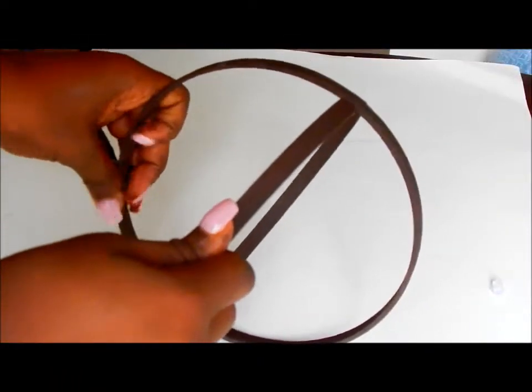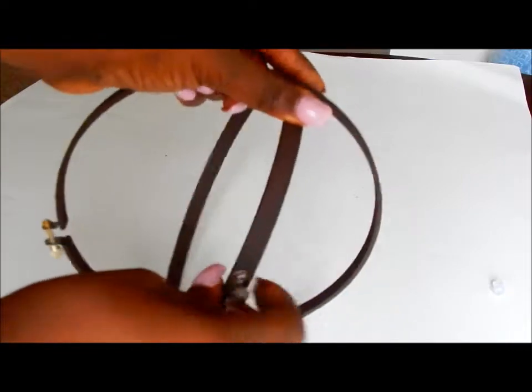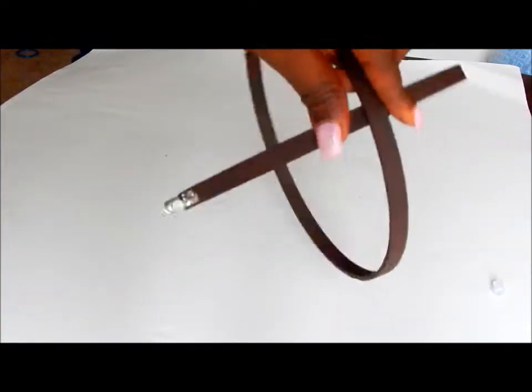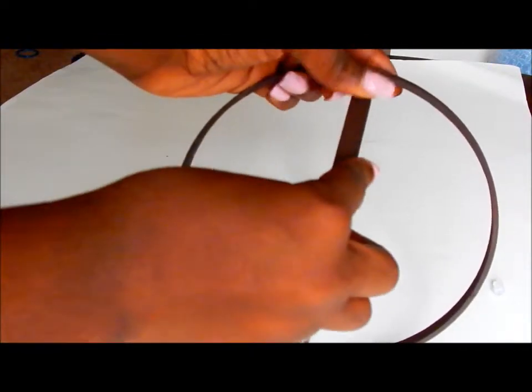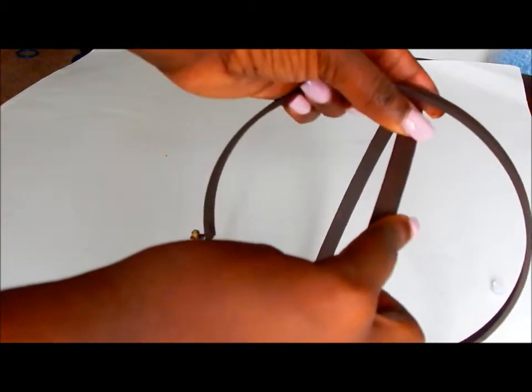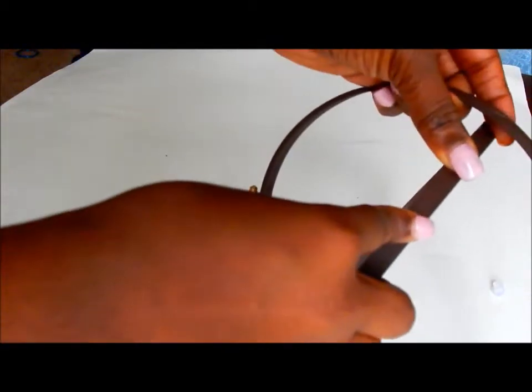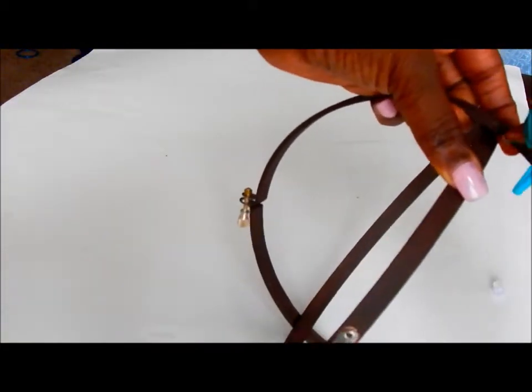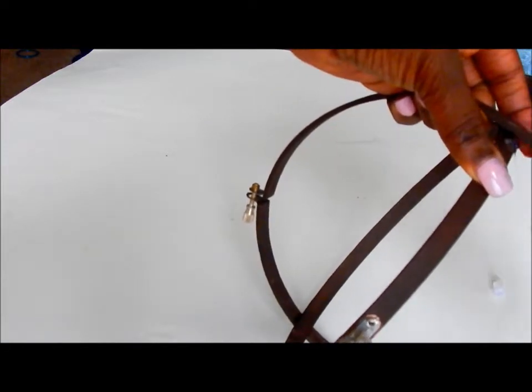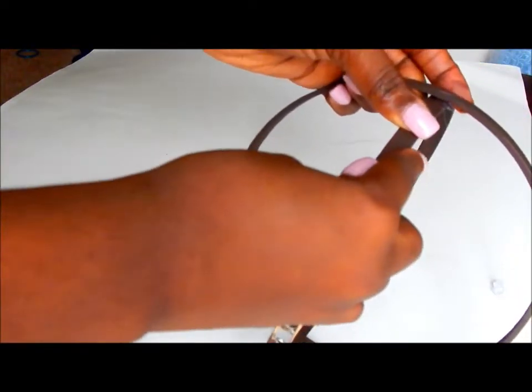Next, you're going to take the two pieces of embroidery hoops that have the metal adjuster pieces and you are going to slide them into one another and try to make sure that they're in the middle. Then you're going to take the hot glue gun and press down on the top and glue them in place.